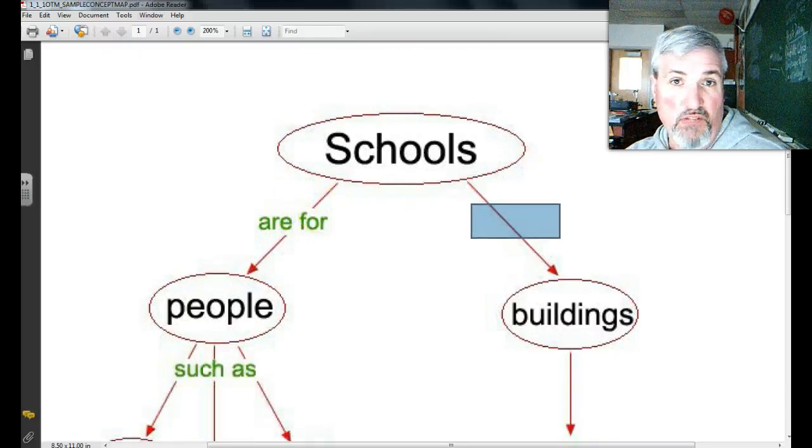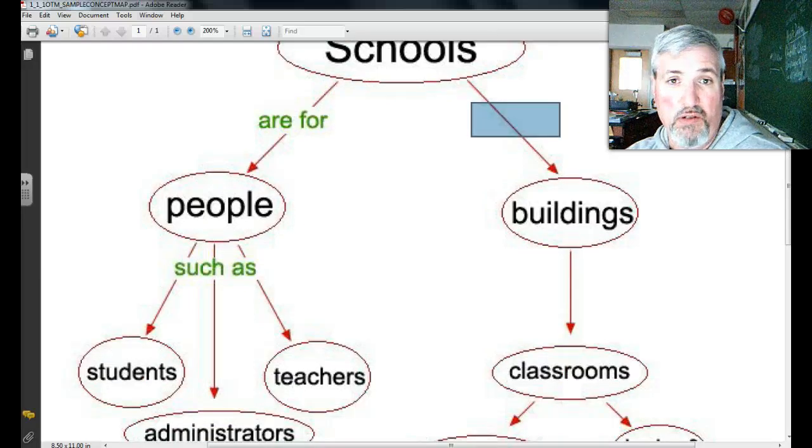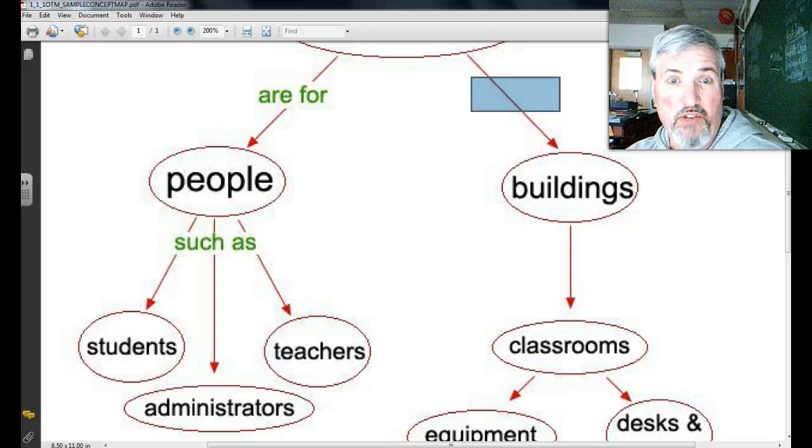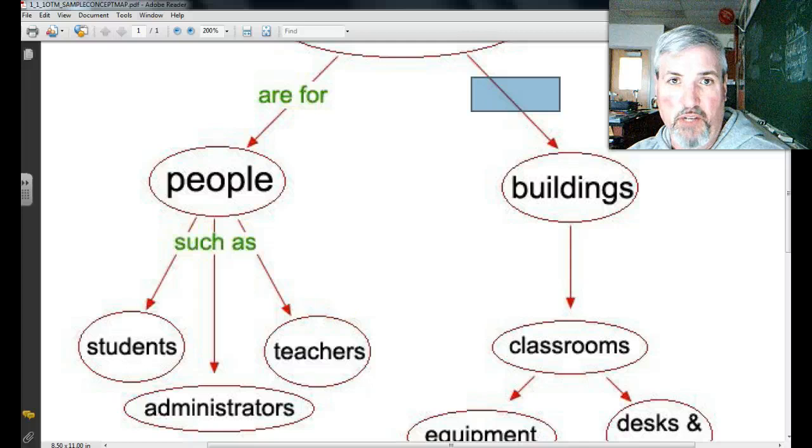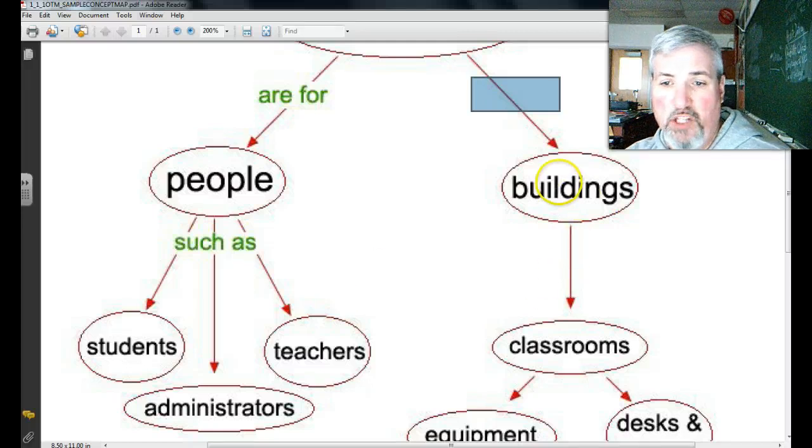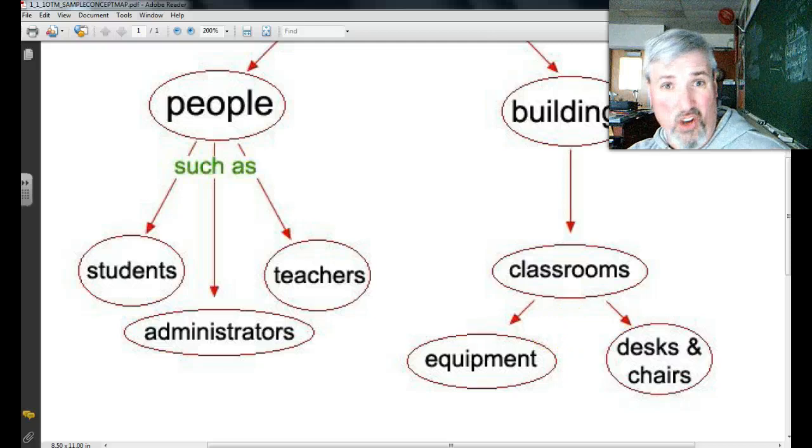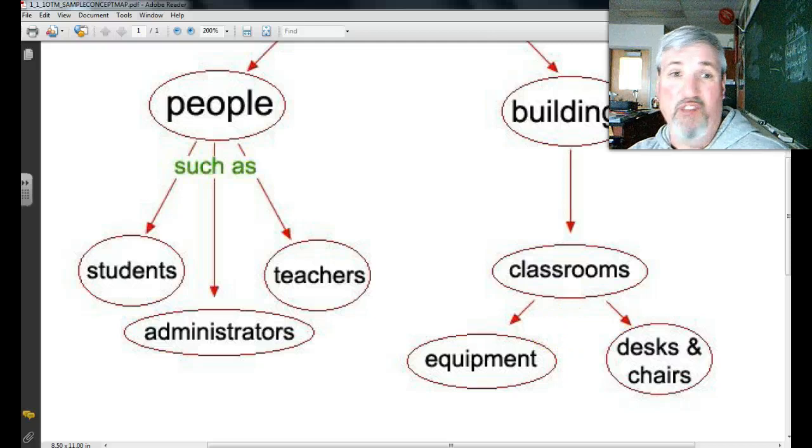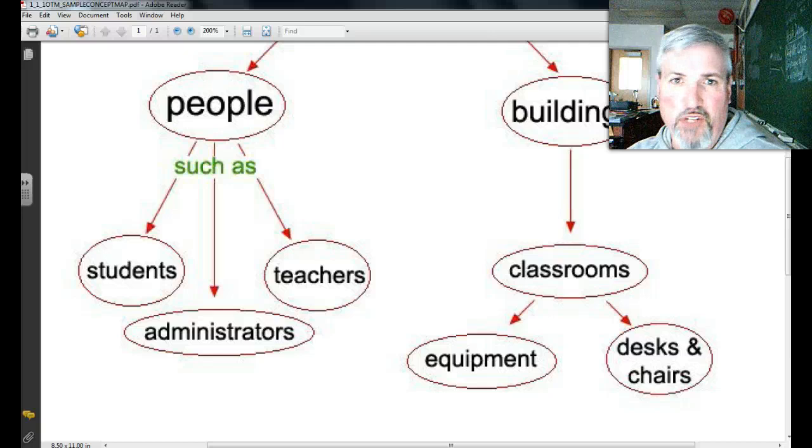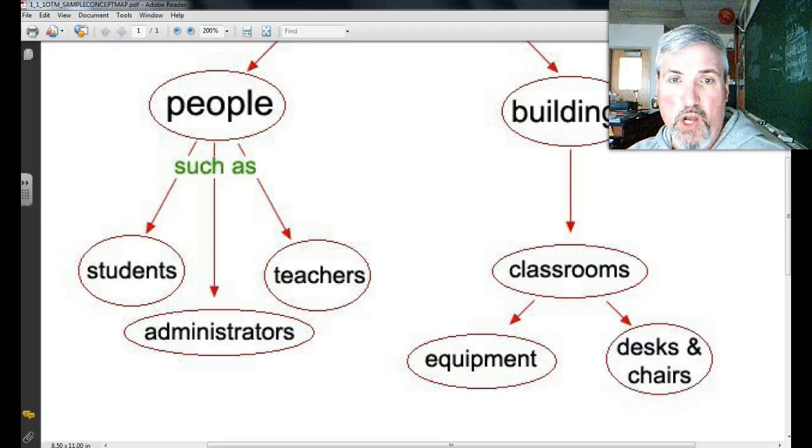Underneath the people, this is what I came up with. People such as students, students obviously go to schools. Administrators, Mr. Barlow, Mrs. Boyce, Mr. Chartrand, they work at the school. And teachers like myself and Mrs. Fryman and everyone else. Over the buildings, the buildings have classrooms. Inside those classrooms, they have equipment. And they have desks and chairs. Now, is that all they have? No, they have lots of stuff. We could go on forever. But we don't need to know every last detail about schools.